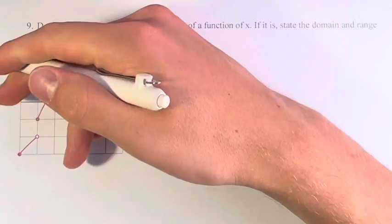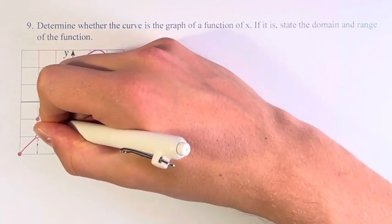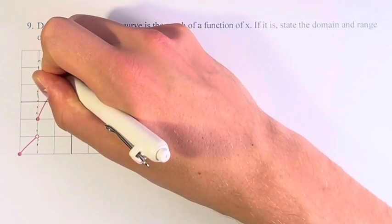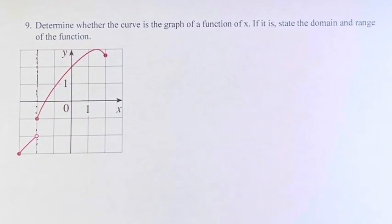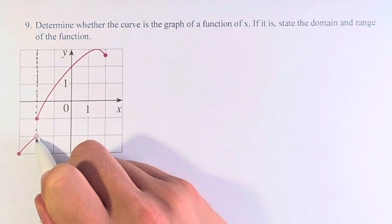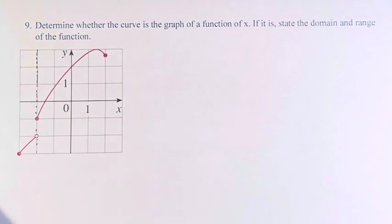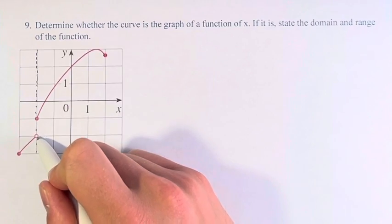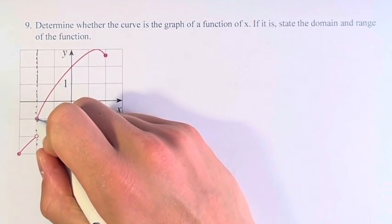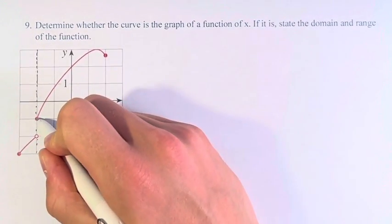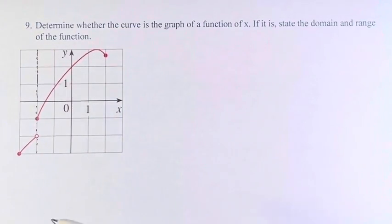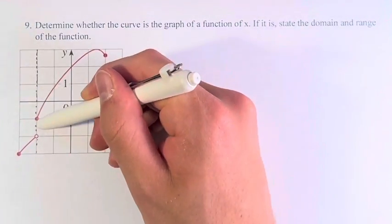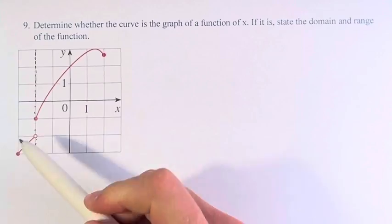At this point, you can see that the function is approaching from two sides, and we might have two different values for the same x value. However, if you look here, this is an open circle, which means that the function approaches it but does not actually include this point. Meanwhile, we have a closed circle here, so it does include this point.